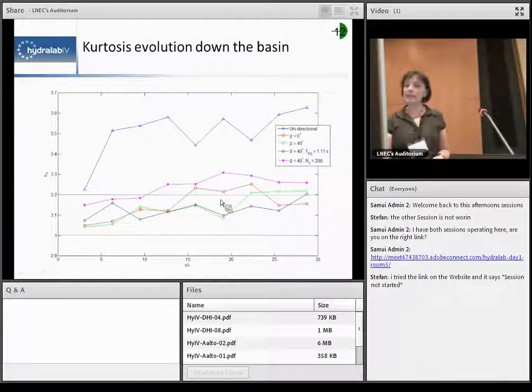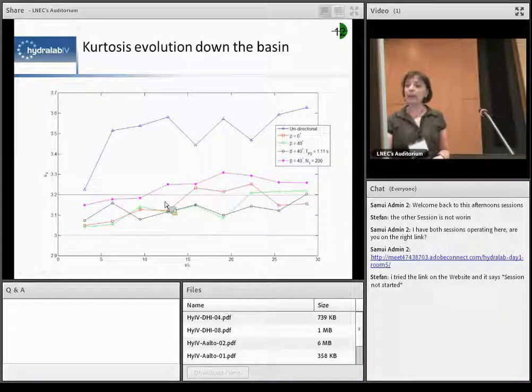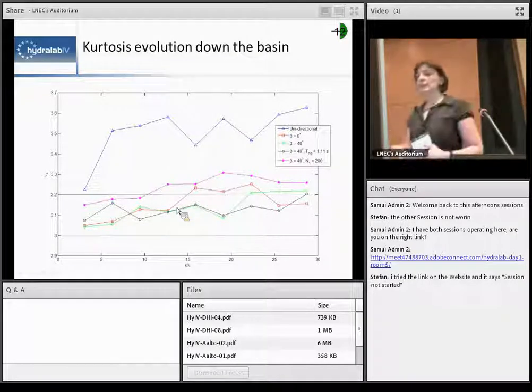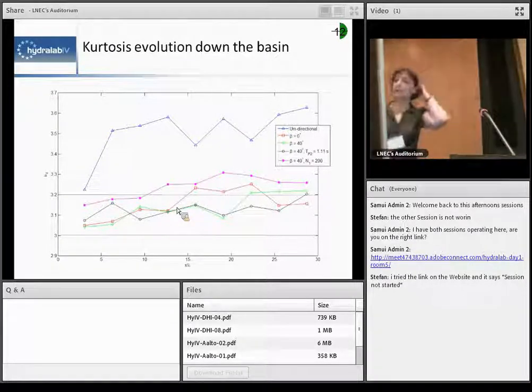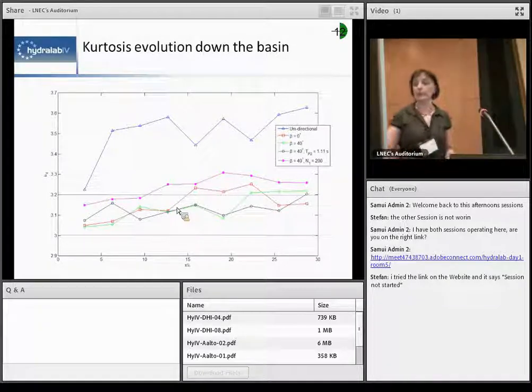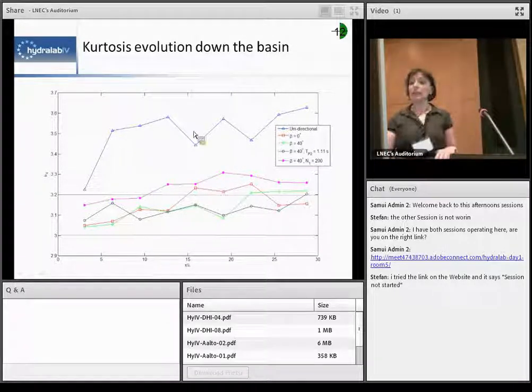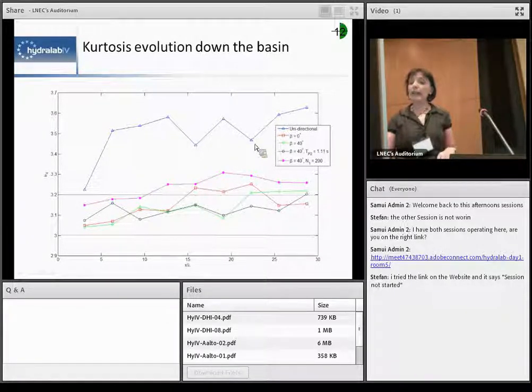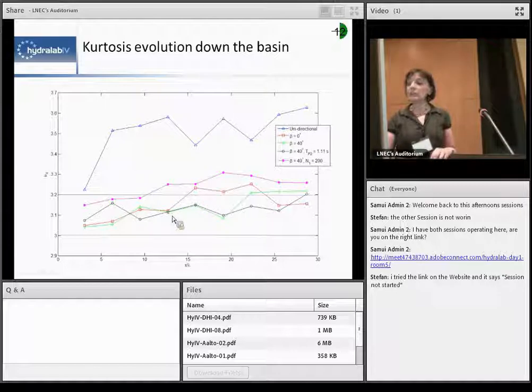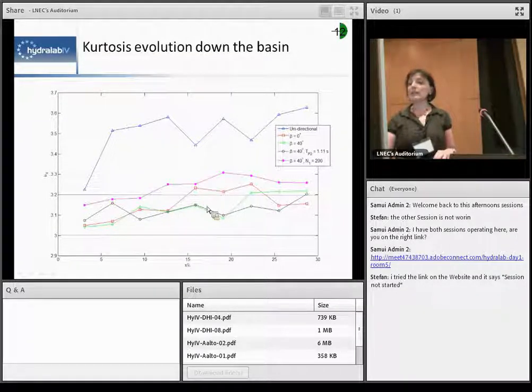So we see here, unidirectional case jumps up. The kurtosis is really high. And in those multidirectional waves, mostly we are down in the kind of bound second order theory except in case of very narrow spectra, directional spectra interacting together, we started to move up and have some free waves.